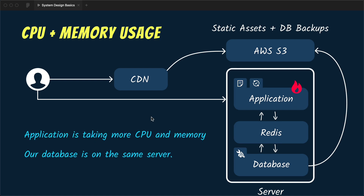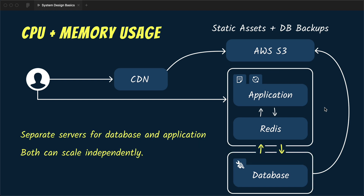After some time we notice that memory and CPU consumption is increasing. Since we have a single server with both the database and the application running on it, they are competing for resources and the application is not scaling well. To fix this we decide to move the database to a separate server so we can scale both the application and the database independently. Now we have more CPU and memory for each, they are no longer competing, and the website is able to serve more users.